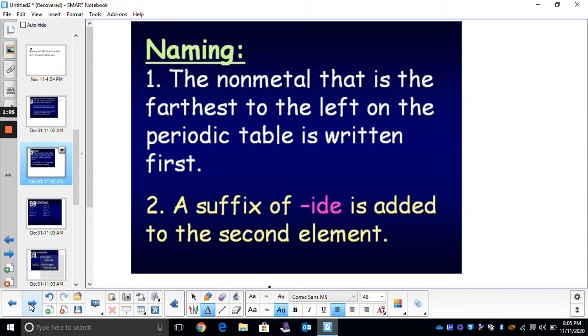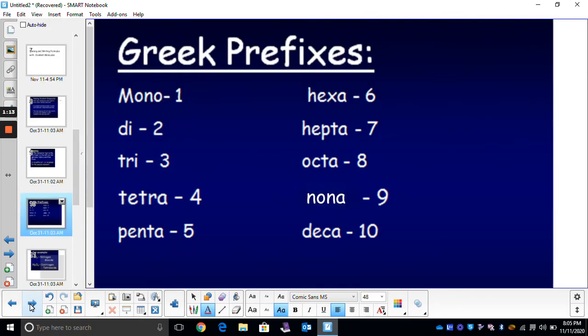We are still going to add -ide at the end of our second element, but we're going to be adding some prefixes. Here are some prefixes we'll be using: mono all the way to deca. We'll use those to describe the subscript when we're naming and writing formulas for covalent molecules.